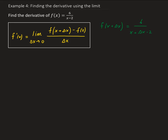We're going to take that expression and substitute it in. So we have the limit of 6 over x plus delta x minus 2, minus the actual function, which is 6 over x minus 2. And all this is going to be divided by delta x.